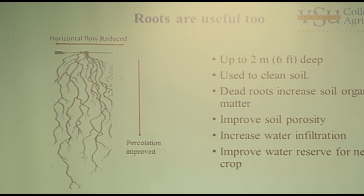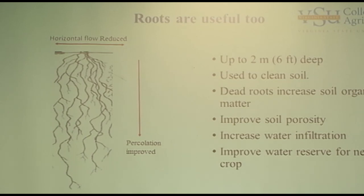The roots go up to about 2 meters deep. When those roots die, you have root channels, and those improve the penetration of water and prevent surface runoff — which is a good thing in agronomic work because that's where you have erosion. By increasing the infiltration of water in the soil, you are improving the water itself for the following crop. So it's beneficial in that context.